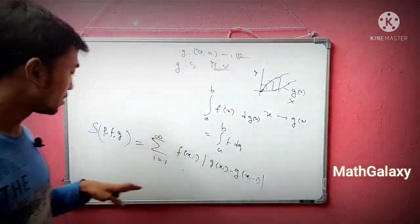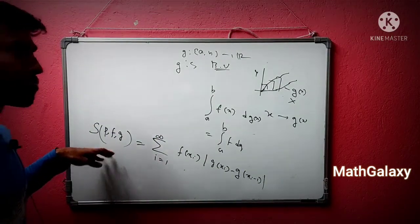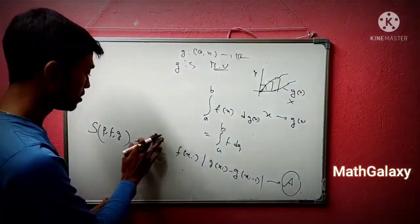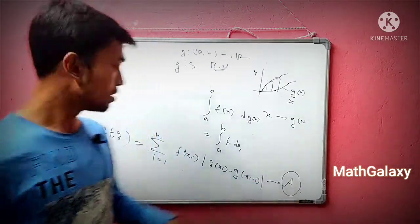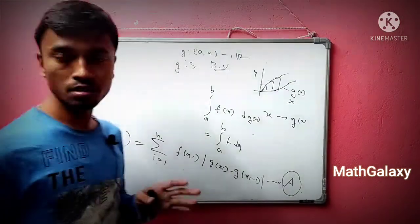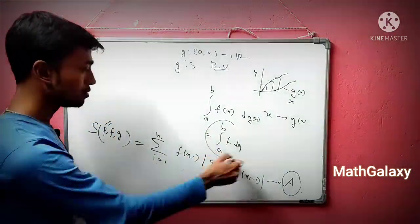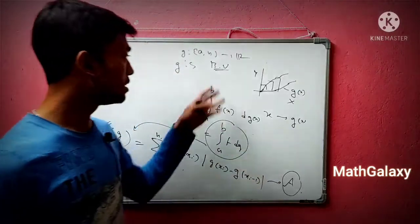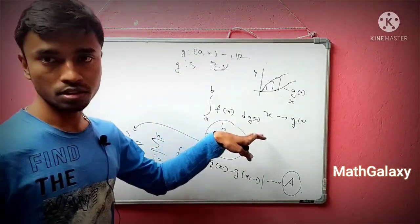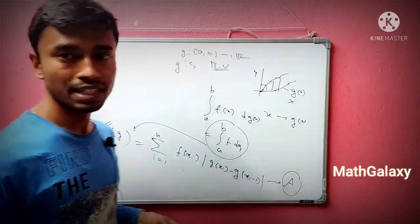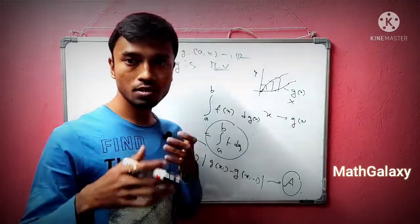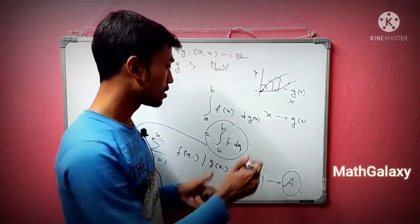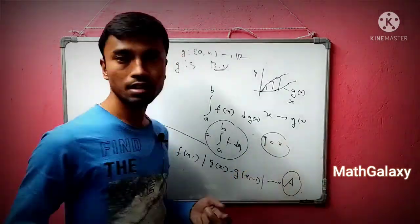S(P, f, g) is a very important quantity. If this sum tends to a particular value 'a' for every partition P, then we say it converges, and that value 'a' is the integral of f with respect to g — that is the Riemann-Stieltjes integration. Riemann-Stieltjes integration is basically the generalized version of Riemann integration. In fact, if you take g(x) = x, then it reduces to nothing but ordinary Riemann integration.